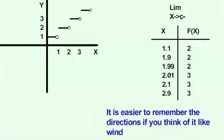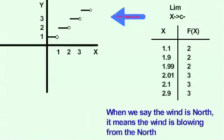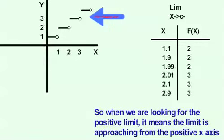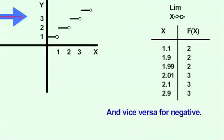It's easy to remember the directions if you think of it like the wind. When we say the wind is north, it means the wind is blowing from the north. So, when we are looking for the positive limit, it means the limit is approaching from the positive x-axis. And vice versa for negative.